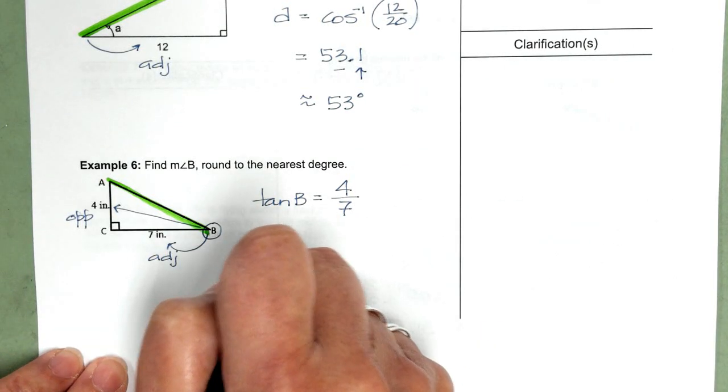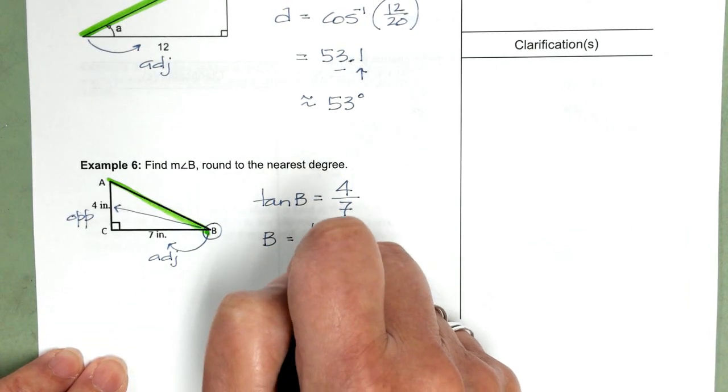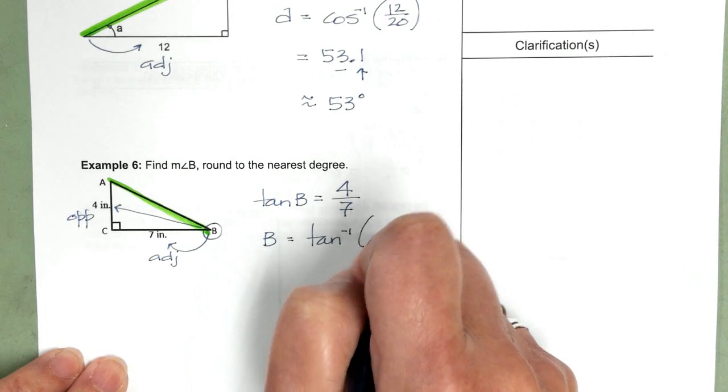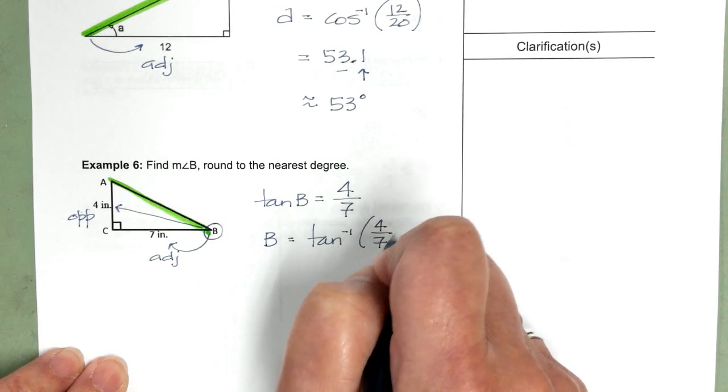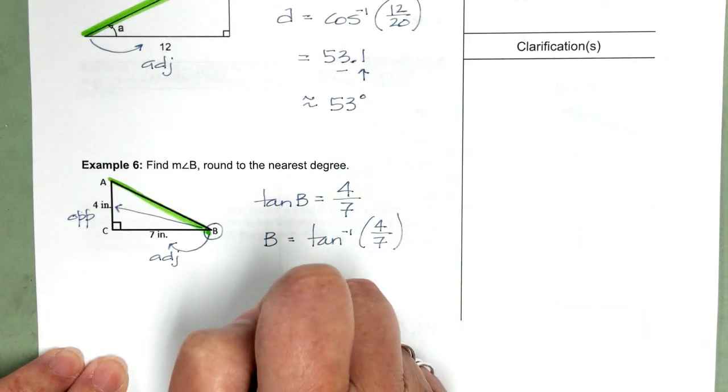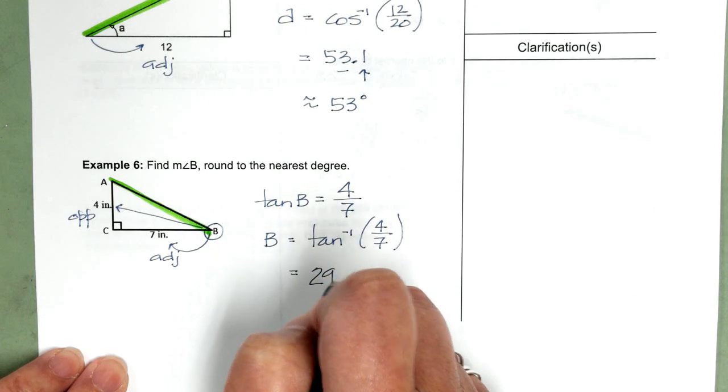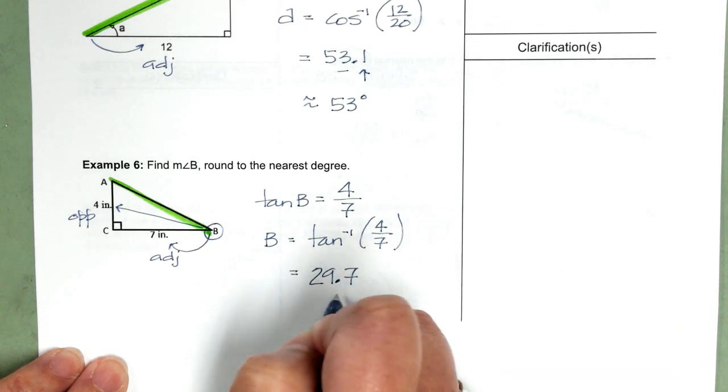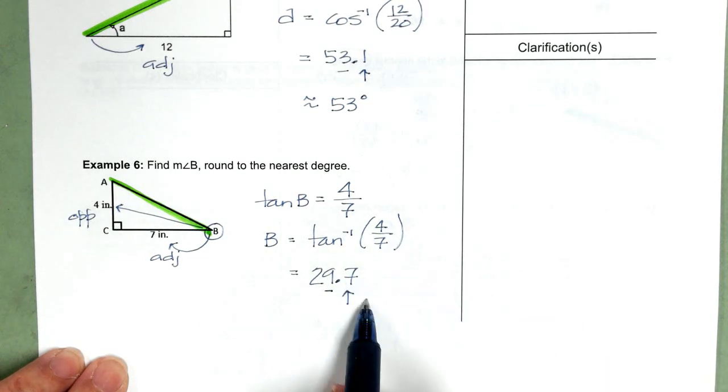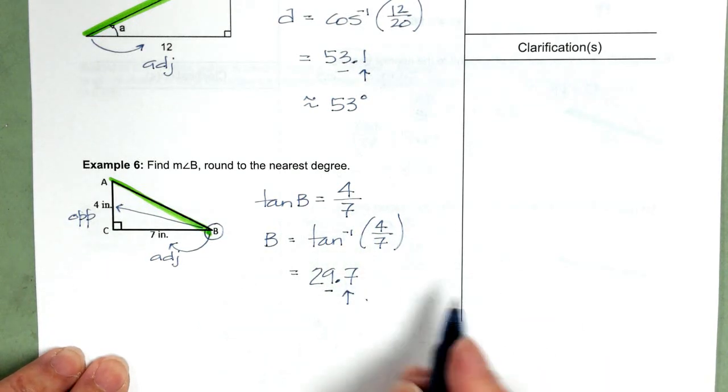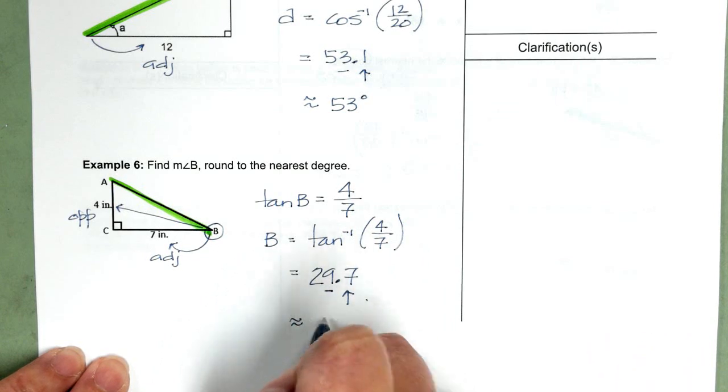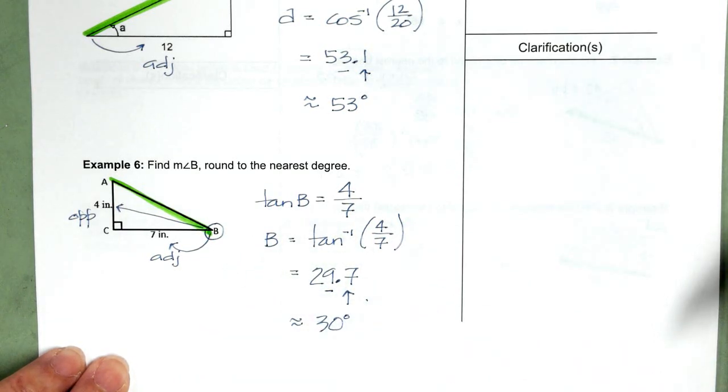So, now we're going to take inverse tangent, 4 divided by 7, that's going to give us 29.7. Again, we're rounding to the nearest degree, so our rounding value is 7, that means we're going to round up, and B equals approximately 30 degrees.